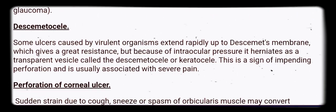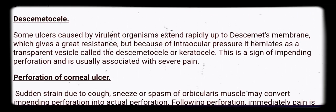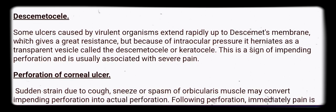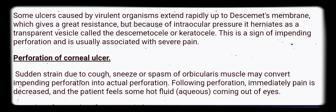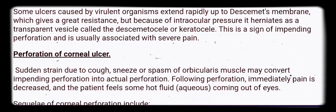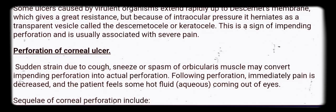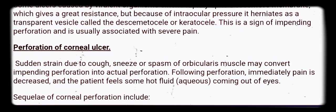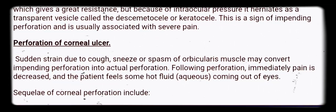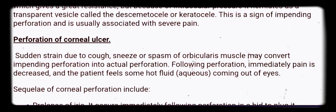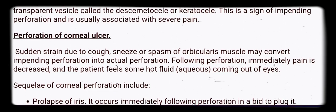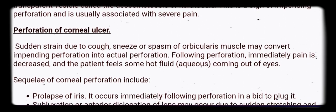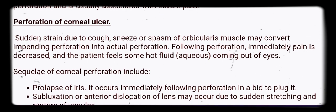Descemetocele: some ulcers caused by virulent organisms extend rapidly up to Descemet's membrane, which gives great resistance, but because of intraocular pressure it herniates as a transparent vesicle called the descemetocele or keratocele. This is a sign of impending perforation and is usually associated with severe pain.